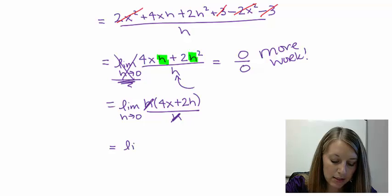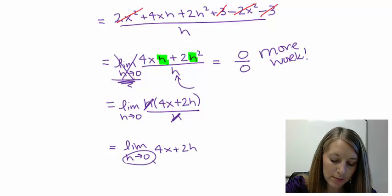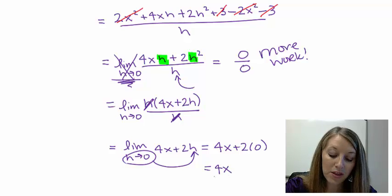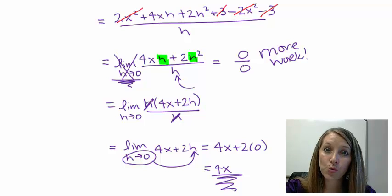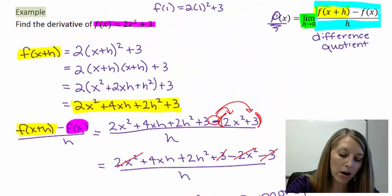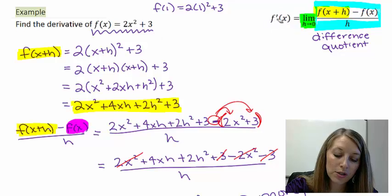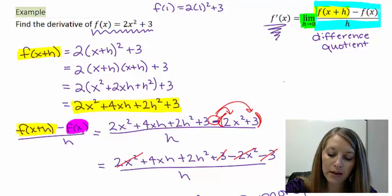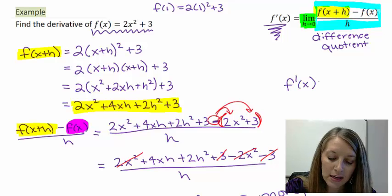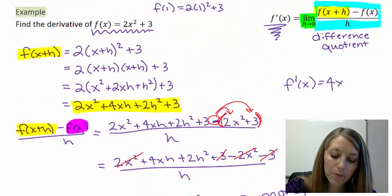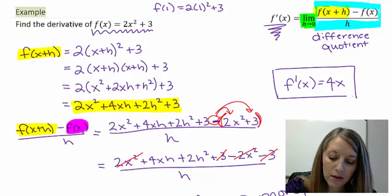Now we have the limit as h goes to 0 of 4x + 2h. Substituting h = 0 gives 4x + 2(0) = 4x. So the derivative of our original function f(x) = 2x² + 3 is f prime of x = 4x.